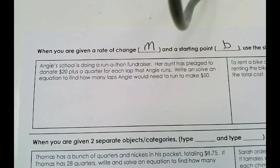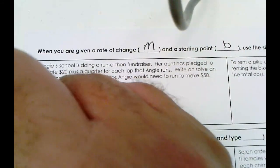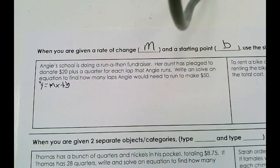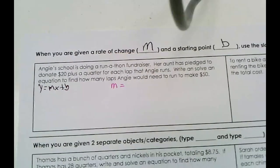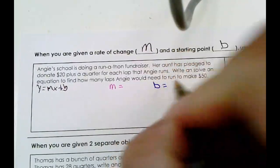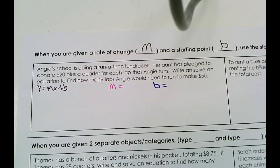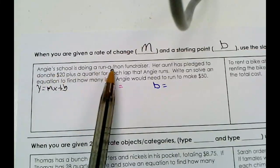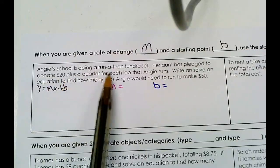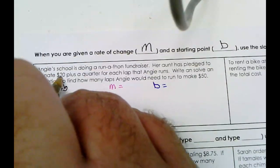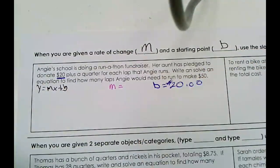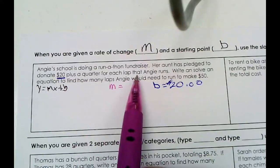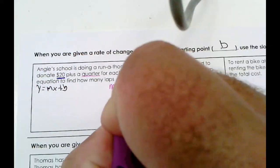We know we're using y = mx + b form. Let's figure out what our slope is, or our rate of change, and then our y-intercept, or starting point. The starting point is what we begin with. Her aunt pledged to donate $20 plus a quarter for each lap, so our starting point is $20. Our slope is the per — a quarter for each lap — so our slope is a quarter, or 25 cents.